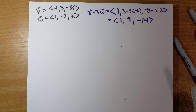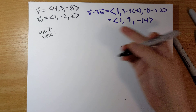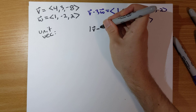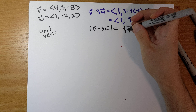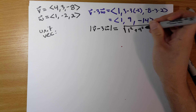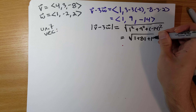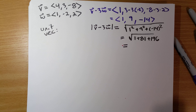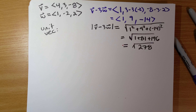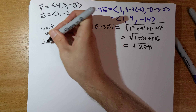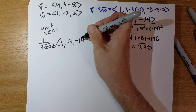So our vector V minus 3W is (1, 9, -14). To find a unit vector, we need the magnitude: the square root of 1 squared plus 9 squared plus negative 14 squared, which is the square root of 1 plus 81 plus 196, giving us the square root of 278. So the unit vector is (1 over √278) times (1, 9, -14).